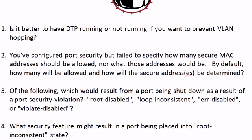And finally, the fourth question: what security feature might result in a port being placed into root inconsistent state? That is indeed root guard. You've got to be really clear on these different things that can happen to ports — root inconsistent, loop inconsistent, error disabled. I've got another video on YouTube called 'Root Guard and the Inconsistent Ports' — it's a 10-minute lab video that shows all that going on, so be sure to check that out.